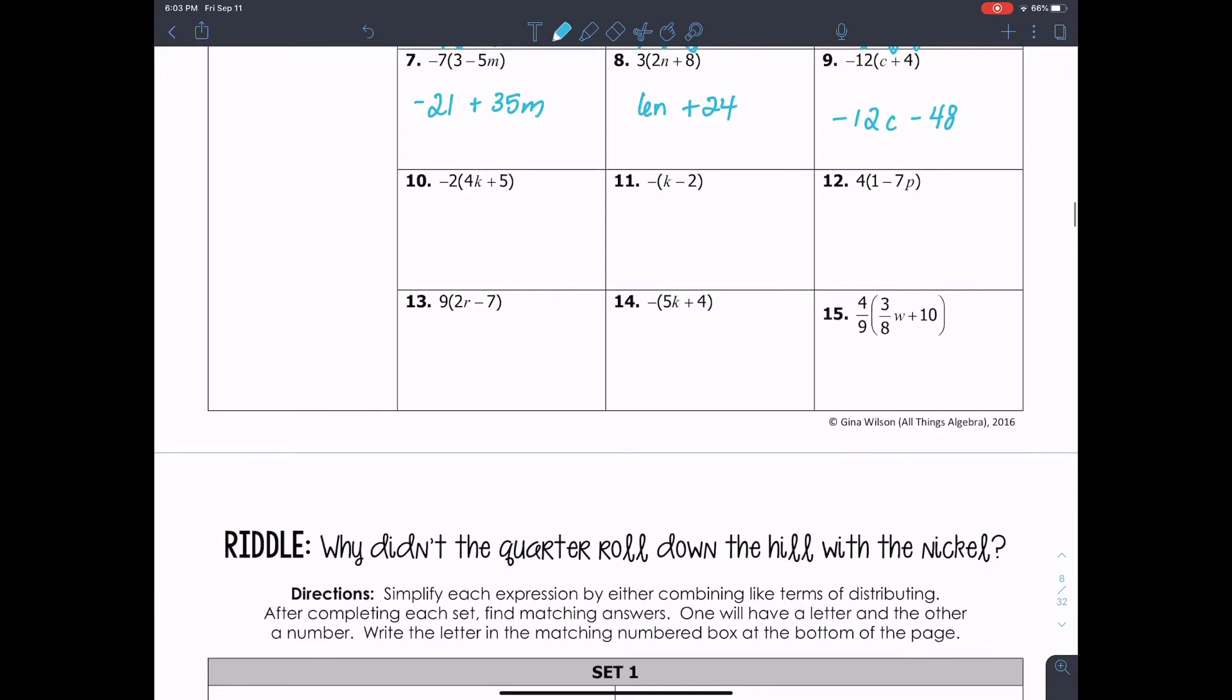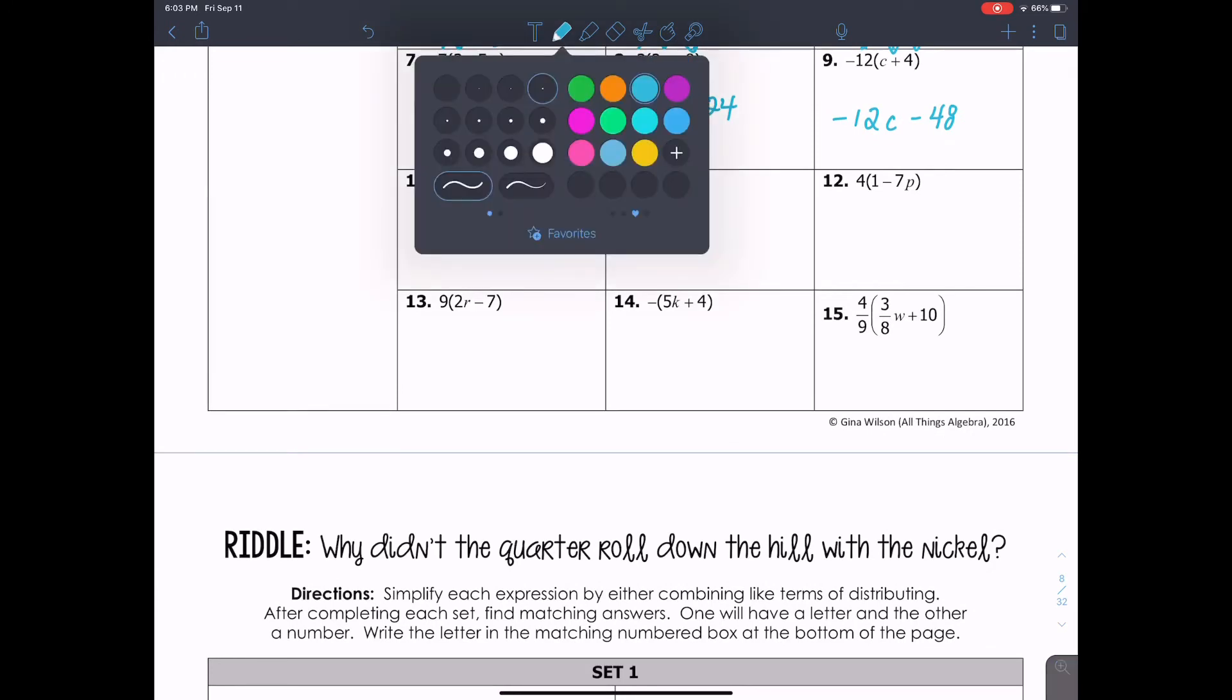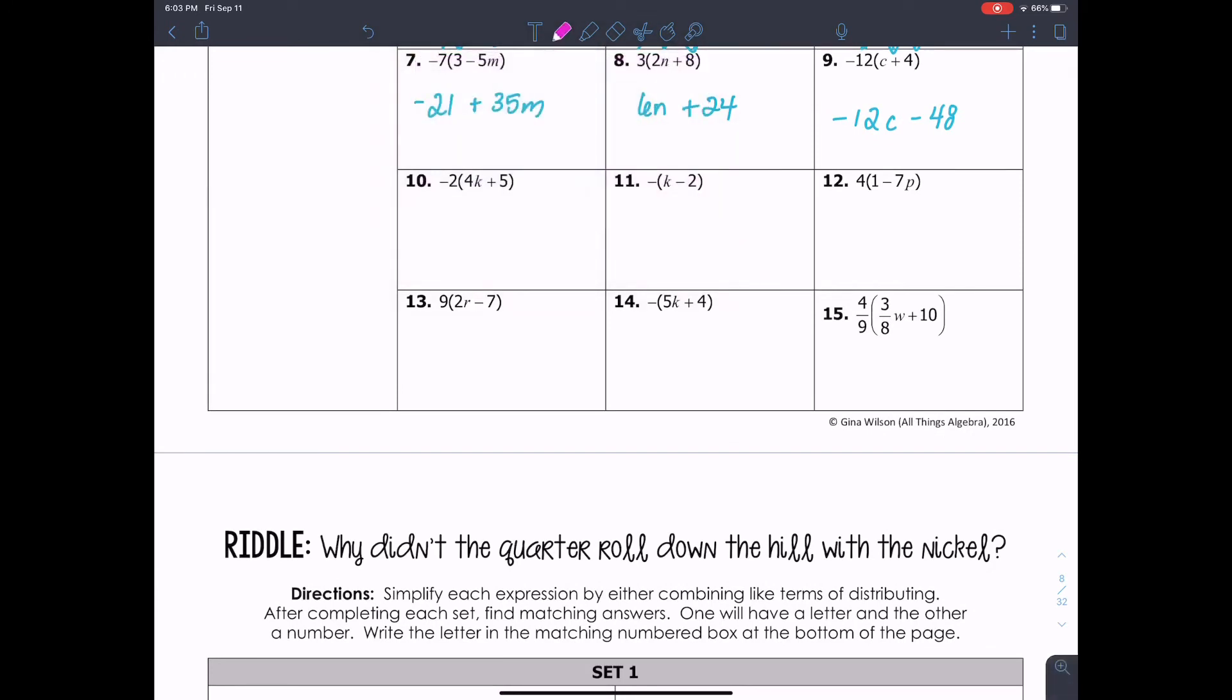You with me so far? Remember, you can pause at any time. Let's go on. We're almost done with this video. Now I have negative 2 times 4K. Gives me negative 8K. Negative 2 times 5. Negative 10. By doing just the multiplication and writing them, this is your expression. Negative 8K minus 10.